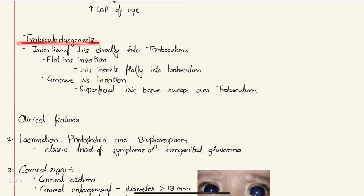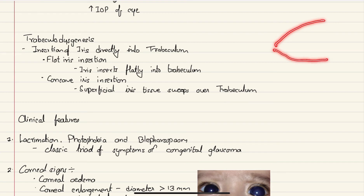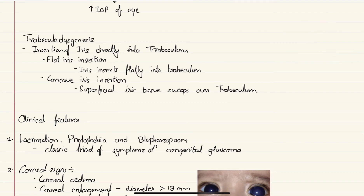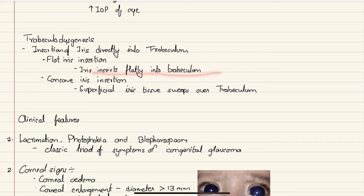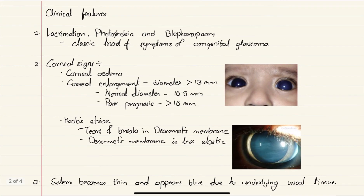Trabecular dysgenesis is when the iris inserts directly into the trabeculum. Normally, between the cornea and iris there is the trabecular meshwork, but in trabecular dysgenesis the iris inserts into the trabeculum, impairing the flow of aqueous humor through it and increasing intraocular pressure. This can be due to flat iris insertion — where the iris inserts flatly into the trabeculum — or concave iris insertion, where superficial iris tissue sweeps over the trabeculum.